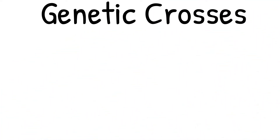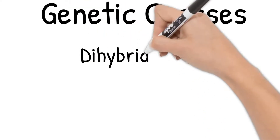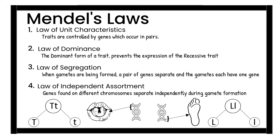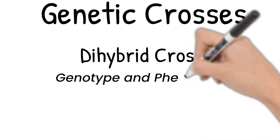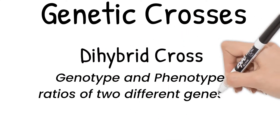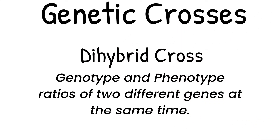Today we'll take a look at our last type of genetic cross, a dihybrid cross. Think back to the video about Mendel and his four laws, or re-watch the video. One of the laws was the law of independent assortment, which stated genes found on different chromosomes separate independently during gamete formation. Dihybrid crosses look at the possible genotype and phenotype ratios of two different genes at the same time, so this rule will be important now.